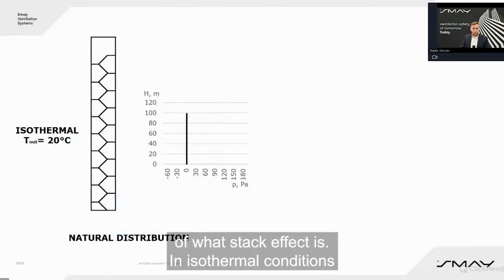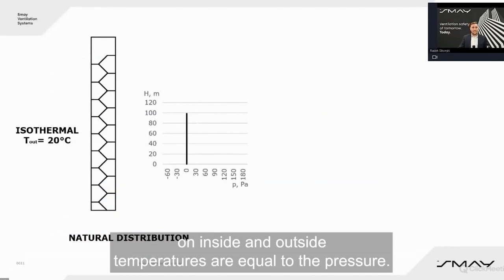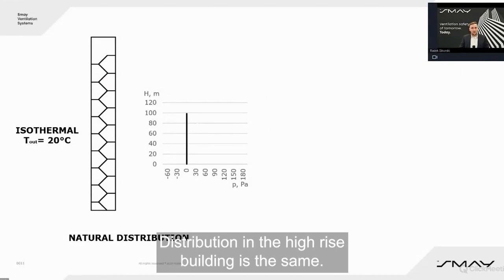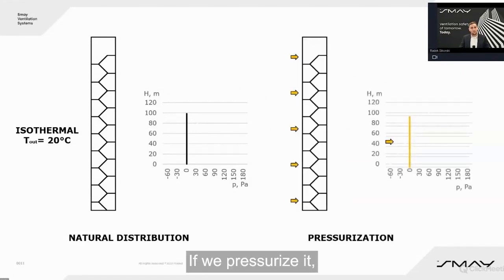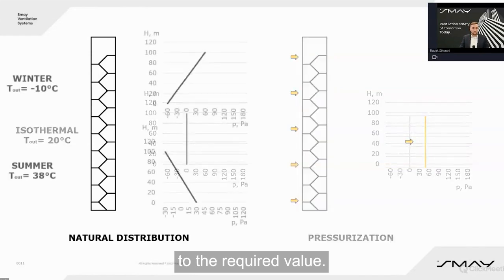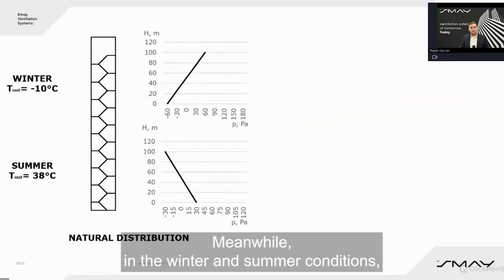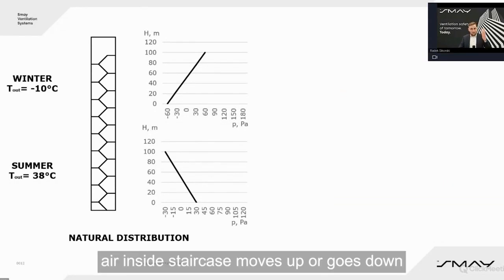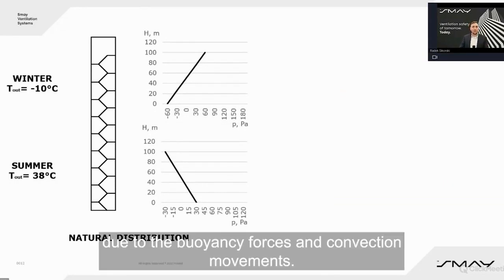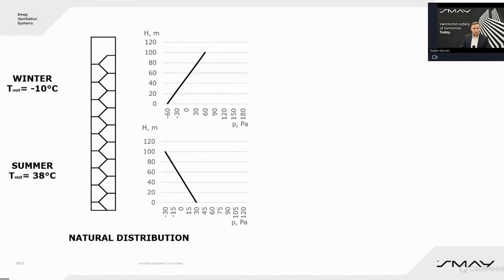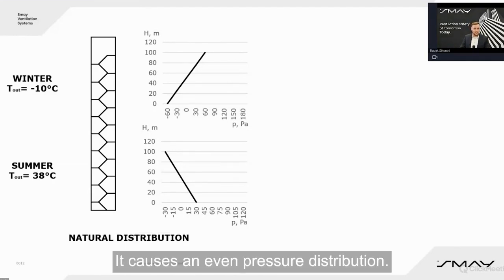A quick reminder of what the stack effect is. In isothermal conditions, so when inside and outside temperatures are equal, the pressure distribution in a high-rise building is the same. But during winter and summer conditions, air inside the staircase moves up or goes down due to buoyancy forces and convection movements, causing uneven pressure distribution.